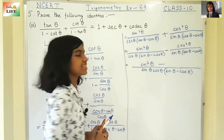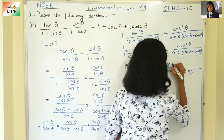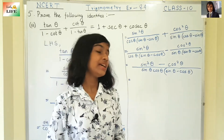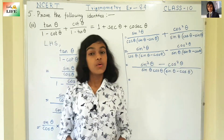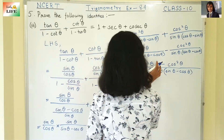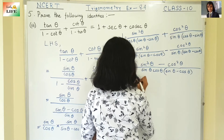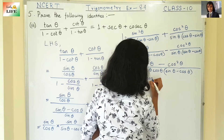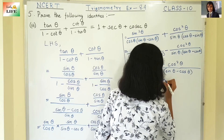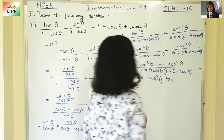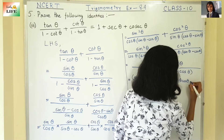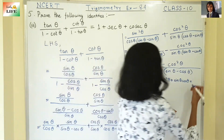Now, if sin theta is a and cos theta is b, then the numerator is a cubed minus b cubed. What is a cubed minus b cubed? It is a minus b, times a squared plus ab plus b squared. So sin theta minus cos theta, times sin squared theta plus sin theta cos theta plus cos squared theta, all over sin theta cos theta into sin theta minus cos theta.